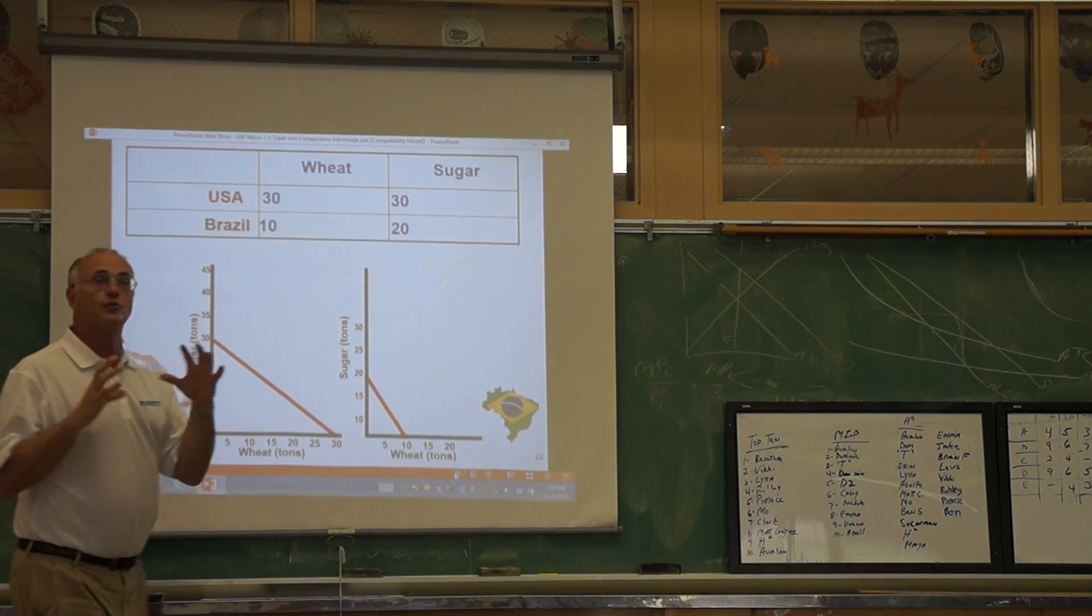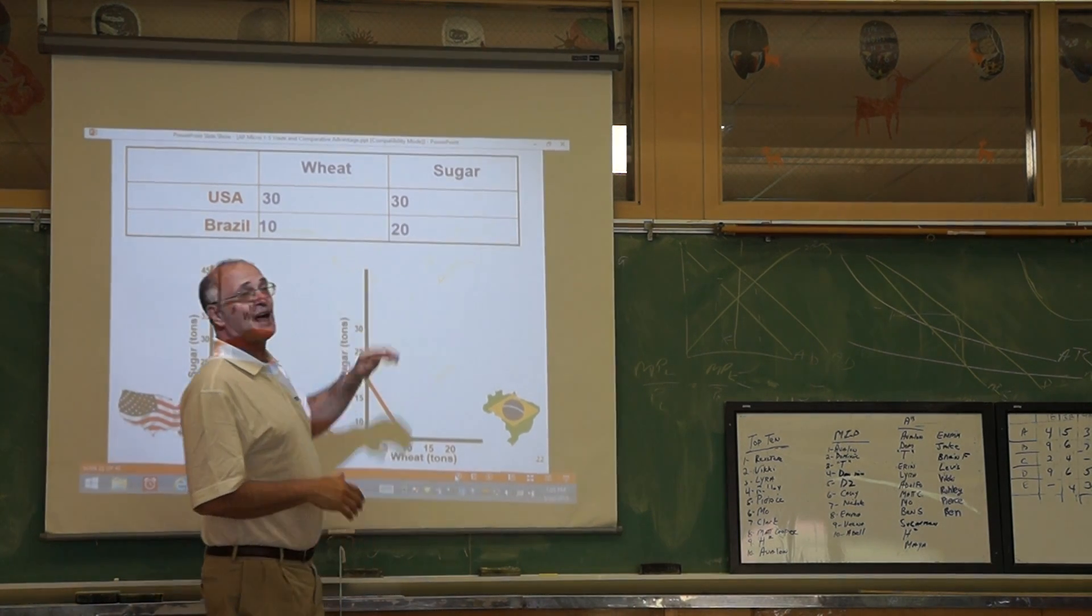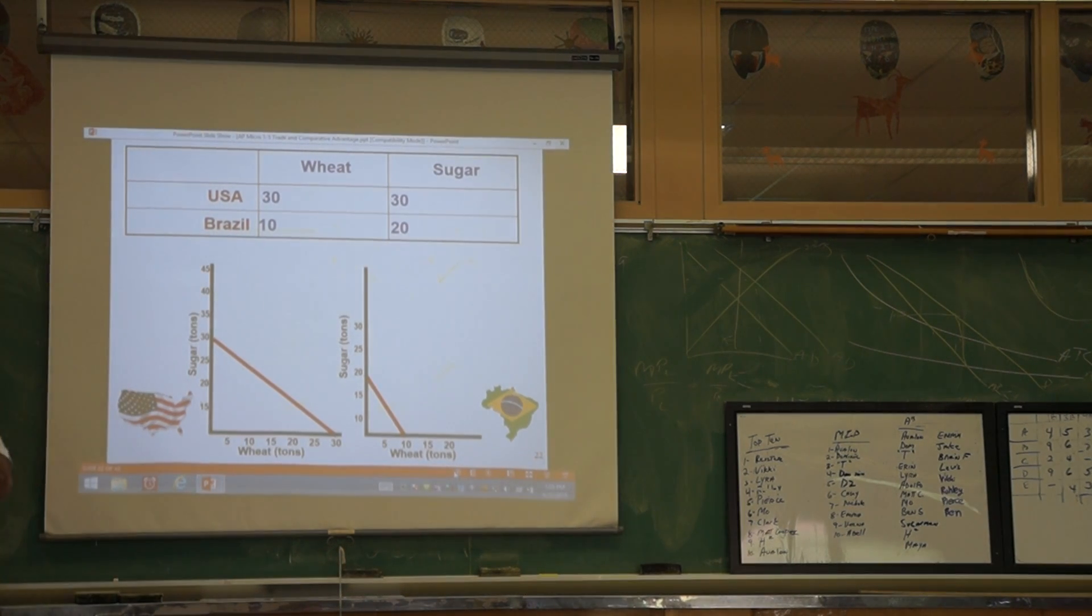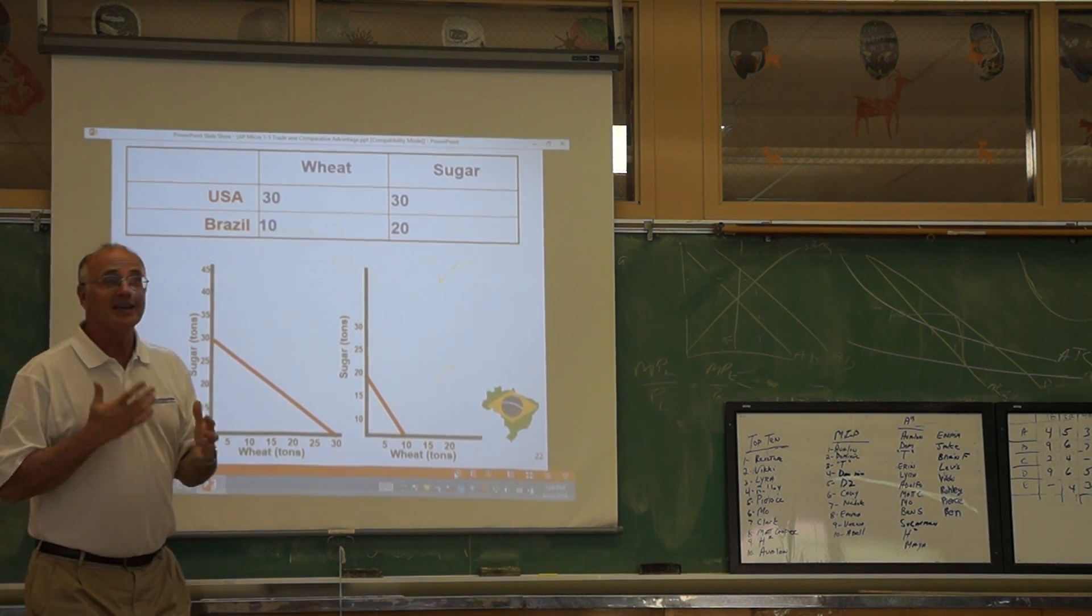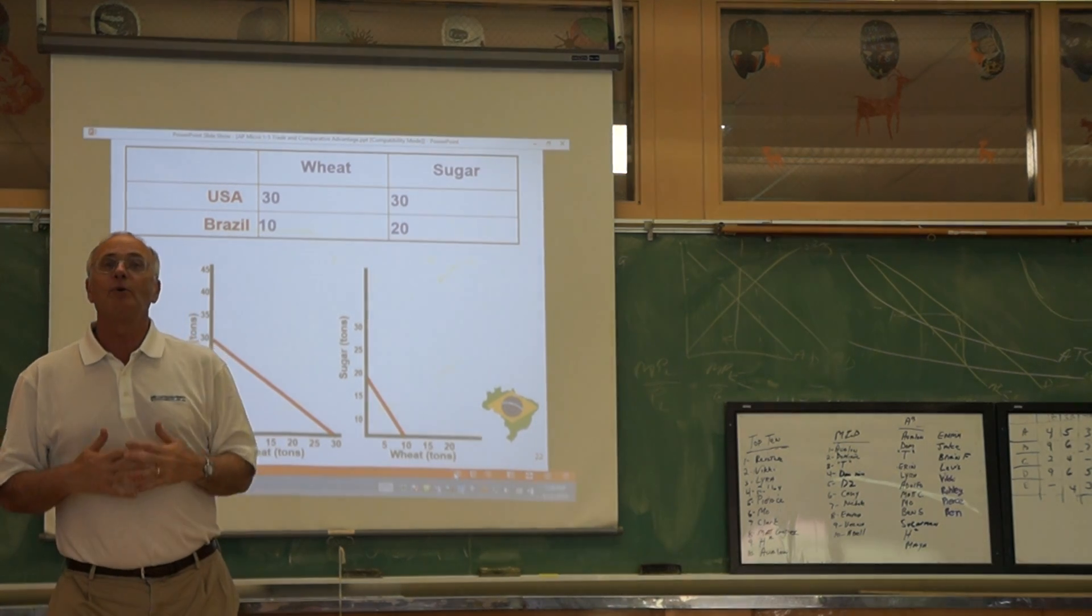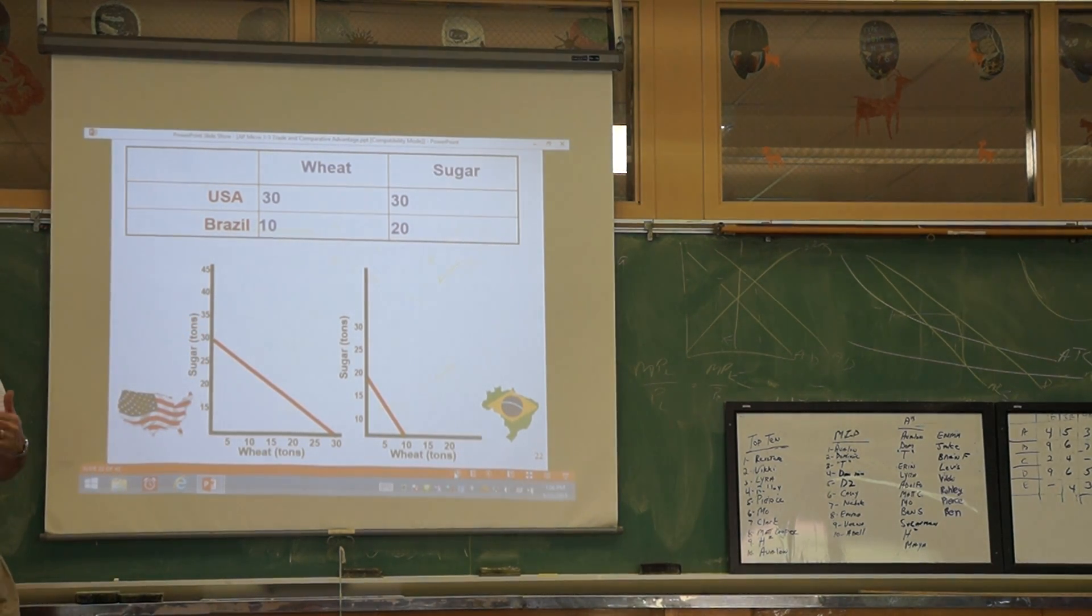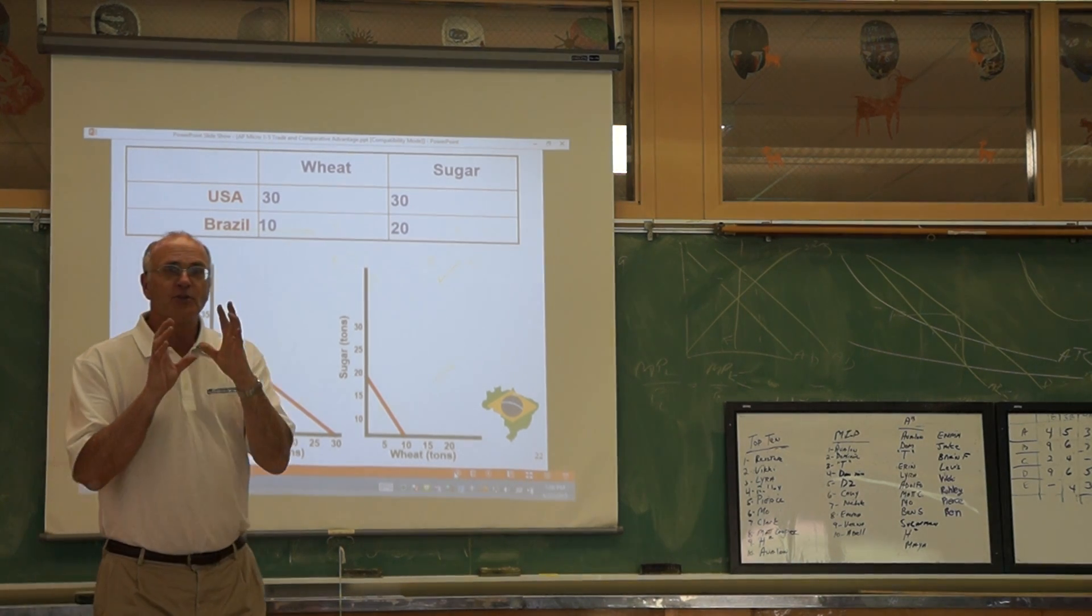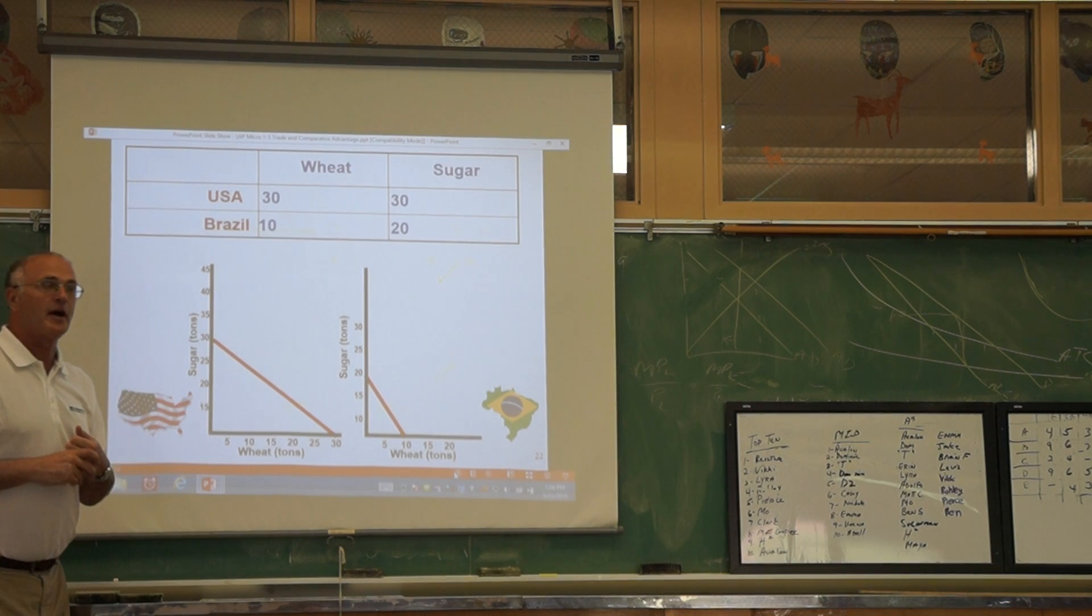In comparative advantage, if one country has the comparative advantage in wheat, the other country must have the comparative advantage in sugar. If the United States has the comparative advantage in wheat and makes more wheat, we will export that wheat to Brazil and import sugar. This is one of the things that confuses students about foreign trade.